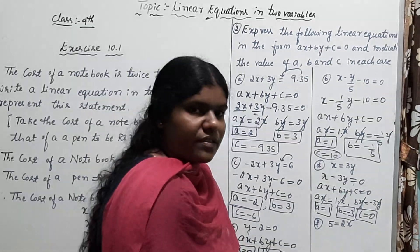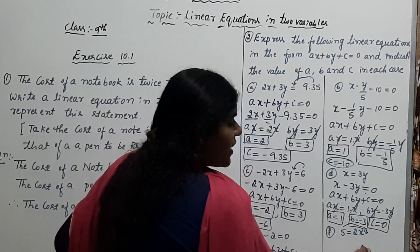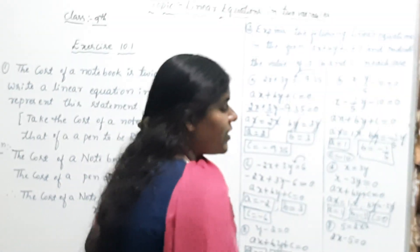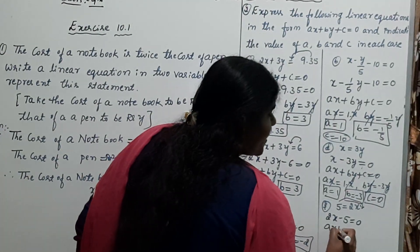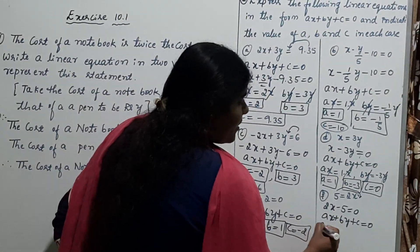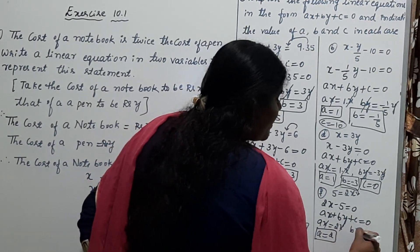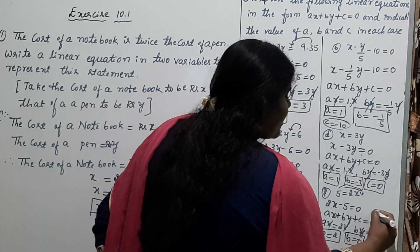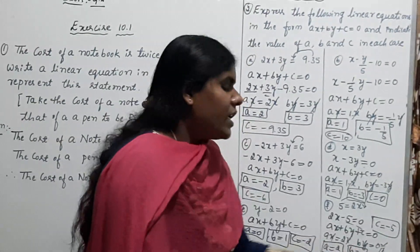The last problem is 5 = 2x. Transfer 5 to the right-hand side: 2x − 5 = 0. The y term is missing. Comparing with standard form AX + BY + C = 0: A = 2 (coefficient of x), B = 0 since y is not given, and C = −5.